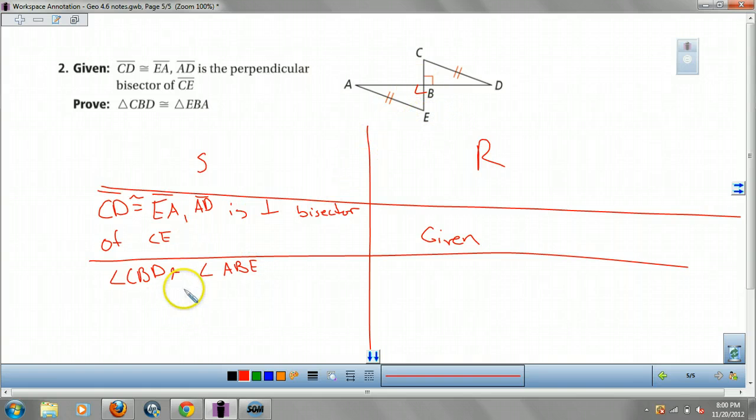Well, I guess I can, because perpendicular bisector are going to be right angles. Okay, how do you know those two triangles are right triangles? Well, that's by your, def, of perpendicular bisector.